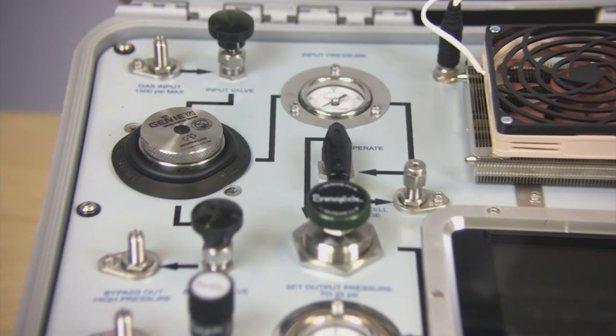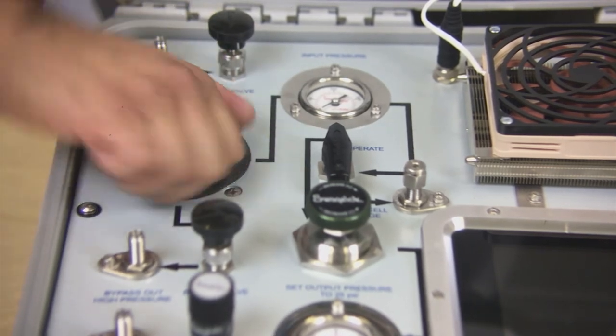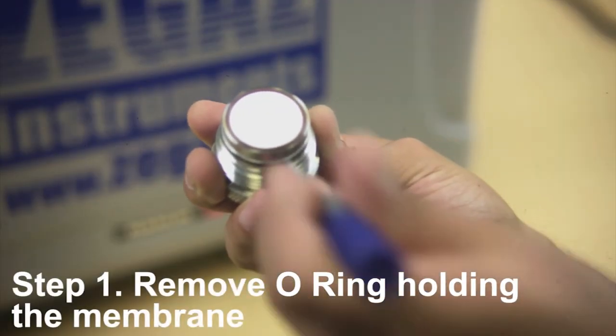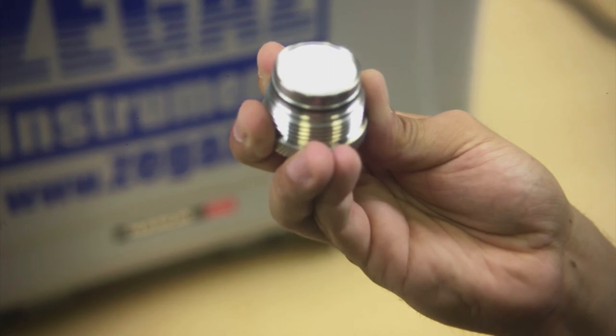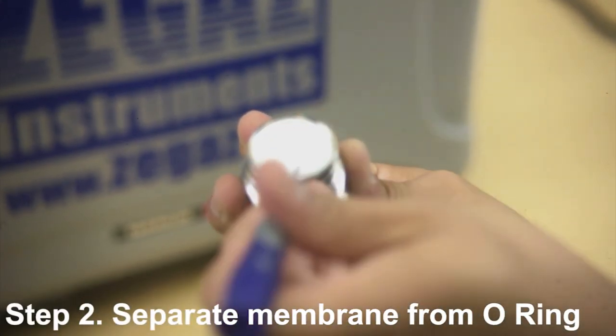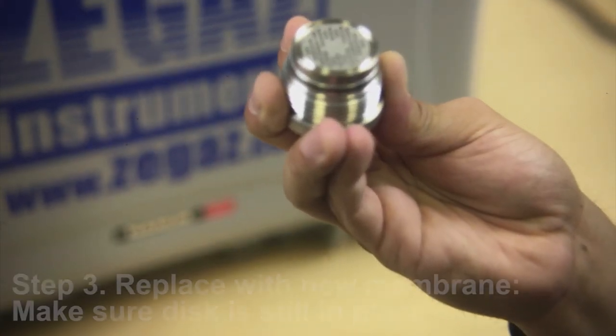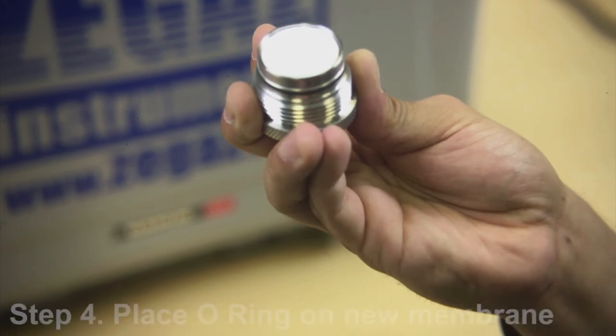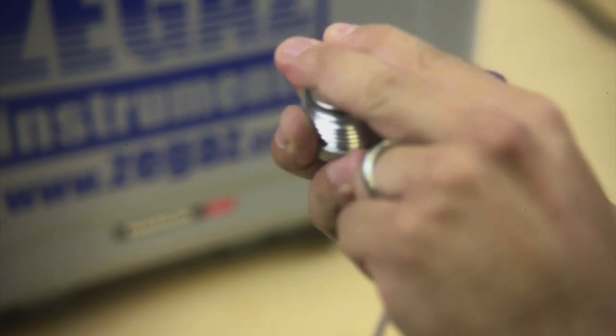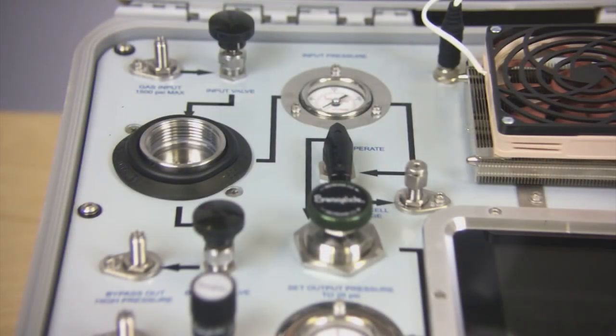To change the membrane filter, make sure that the system is powered down and all gas connections have been removed. Confirm depressurization by opening the bypass valve and viewing the gauges. Unscrew the filter head. Remove the O-ring holding the membrane. Separate the membrane from the O-ring. Replace with a new membrane. Make sure the disc is still in place. Place the O-ring on the new membrane to secure in place. Screw the filter head back into the housing.